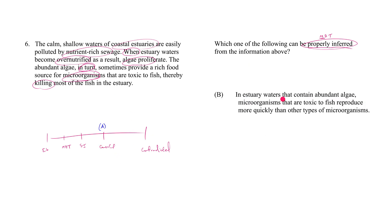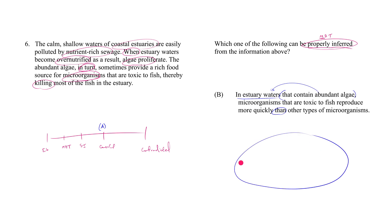Now let's look at B: 'In estuary waters that contain abundant algae, microorganisms that are toxic to fish reproduce more quickly than other types of microorganisms.' Before figuring out where B goes on the spectrum, we have to understand what it's saying. It's also a comparative claim, grammatically similar to A. We set out a domain: we're talking about estuary waters that contain abundant algae.